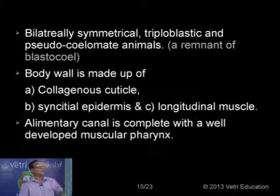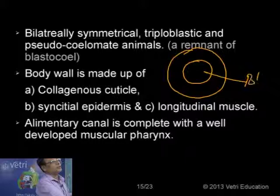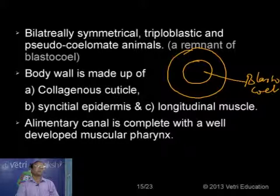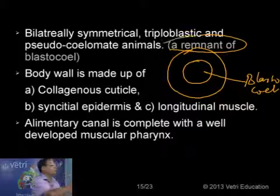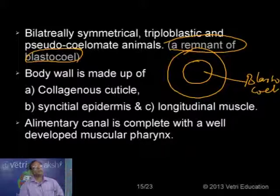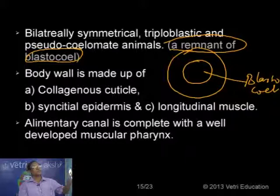But in the case of these roundworms, during development the blastocoel does not get transformed into the adult coelom. There is no transformation of the blastocoel to form the adult secondary coelom — it remains as such with some modifications. That is why the pseudocoelom is nothing but the remnant of the blastocoel. This is an important examination point.